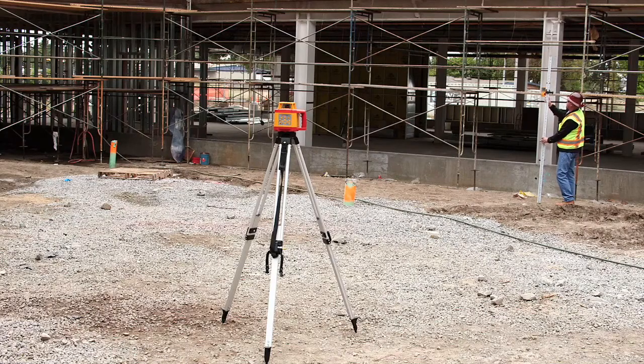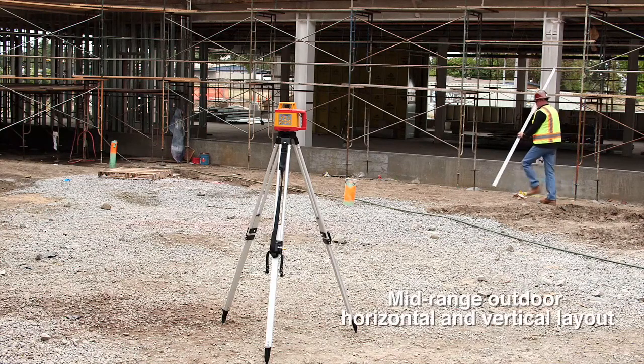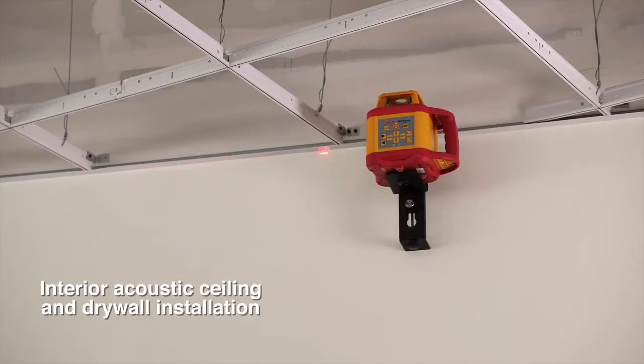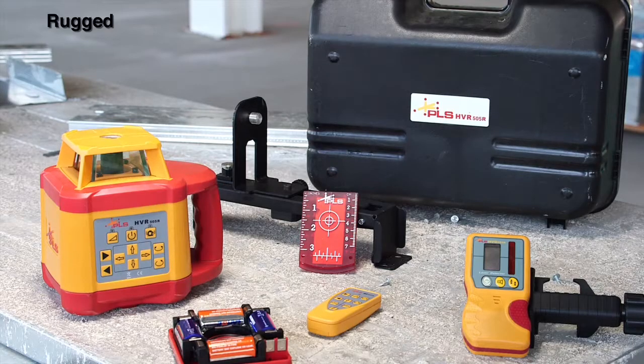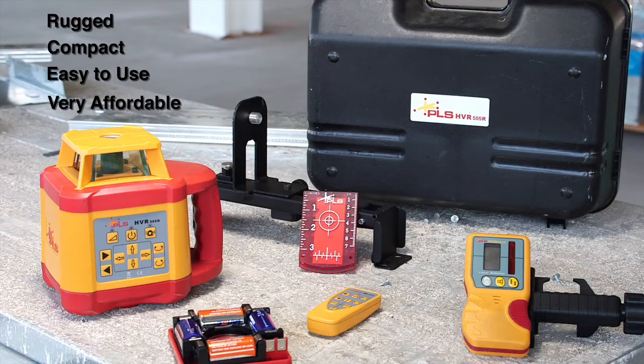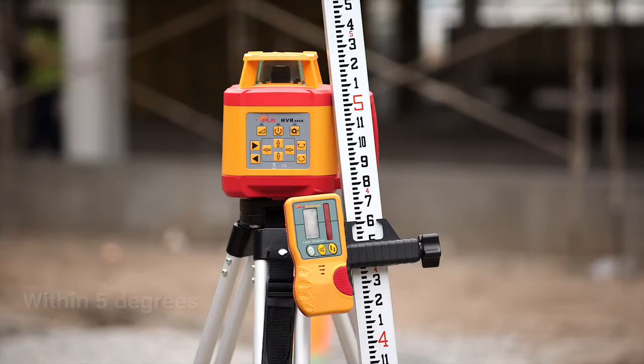This versatile laser is ideal for mid-range outdoor horizontal and vertical layout, as well as interior acoustic ceiling and drywall installation. Rugged, compact, easy to use, and very affordable, the fully automatic HVR 505 is self-leveling to within 5 degrees.